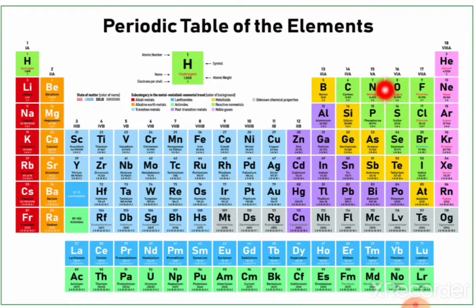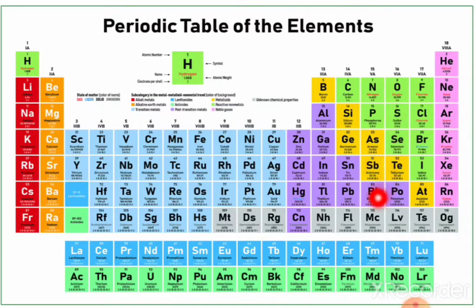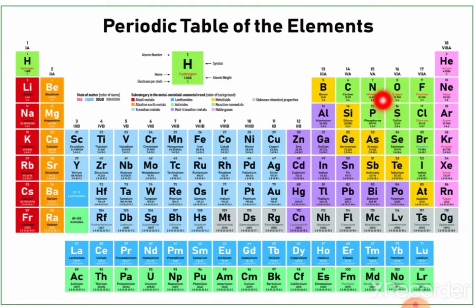Now, the nitrogen family — group 15: nitrogen, phosphorus, arsenic, antimony, bismuth. The simple trick is 'na paas sabhi', meaning all are failed in the exam.